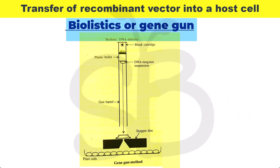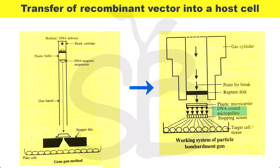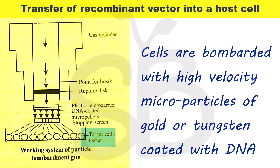Another method is called biolistics, or the gene gun. In this method, DNA is delivered into cells using a bullet. The bullet is coated with DNA and shot into the plant cells at high velocity, breaking through the cell wall. This method is particularly helpful for plant cells.